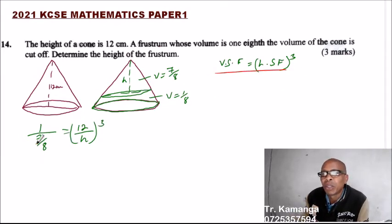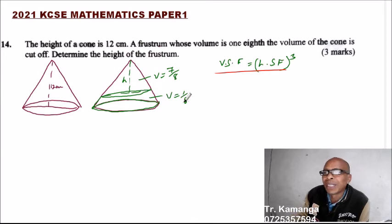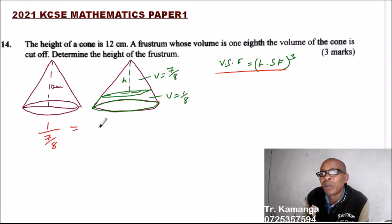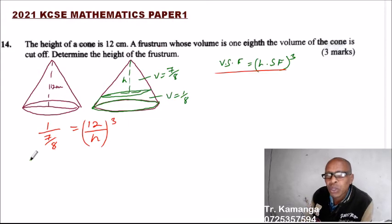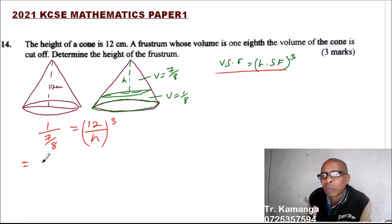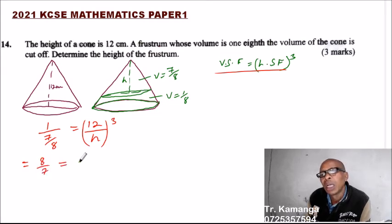We are using the volume scale factor. So 1 divided by 7/8 is the same as 1 multiplied by 8/7. So we say 8/7 is equal to (12/h) cubed.